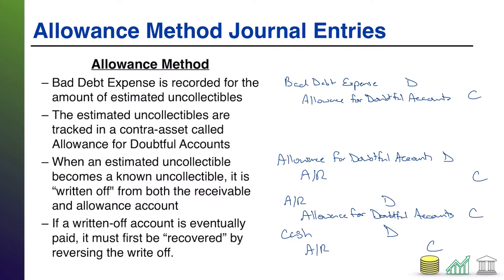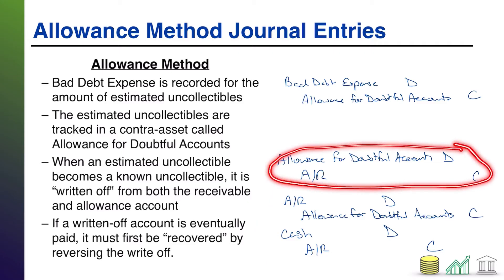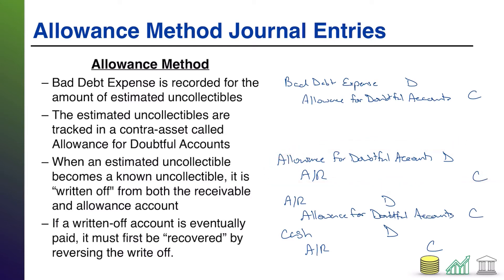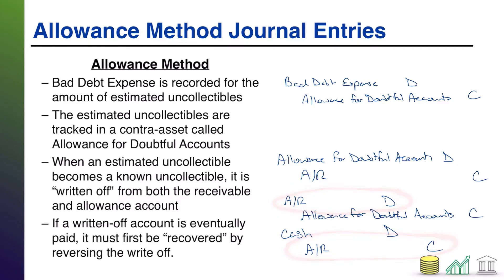But if I teach it that way — debit cash, credit allowance — it sparks looks of bewilderment, because it's hard to understand why you'd credit allowance without showing the longer process. The reason you credit allowance is because you're reversing the write-off previously recorded. Ultimately, AR doesn't change because you put it back on the books, but it comes right back off because they pay it.